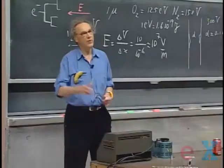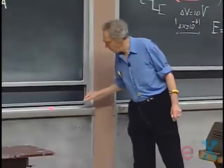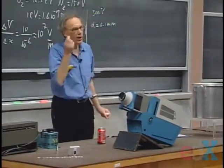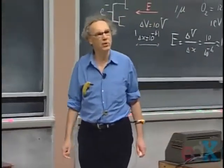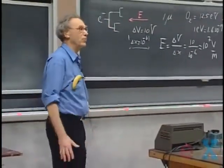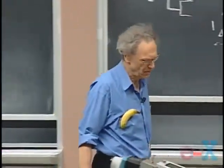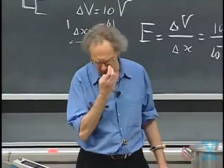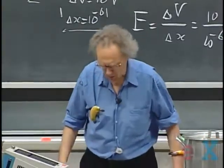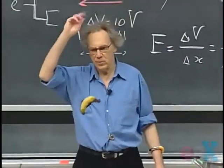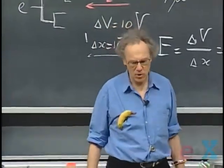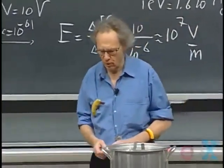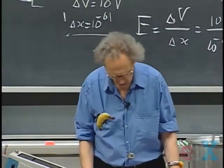If you touch a doorknob and see a spark develop when you're three millimeters away, you can be sure the potential difference between you and the door was on the order of ten thousand volts — because over three millimeters it requires about 10,000 volts to reach 3×10⁶ V/m. When you comb your hair or take your shirt off, you get little sparks at the sharp ends of hair or fabric, where the electric field reaches about 3×10⁶ V/m.